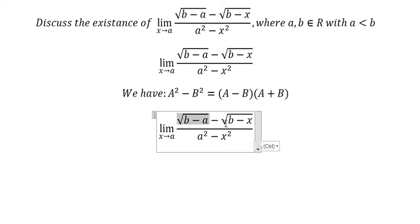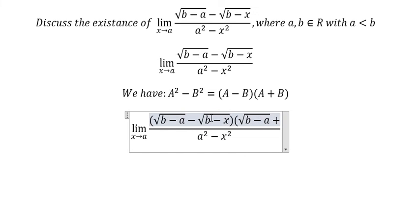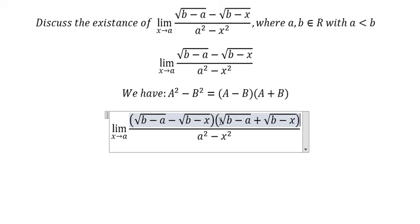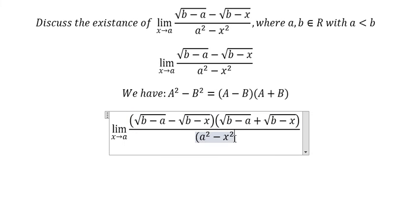So this one we have a minus b, so we need to multiply with a plus b. Because we multiply this one on the numerator, that means we need to multiply that one on the denominator.